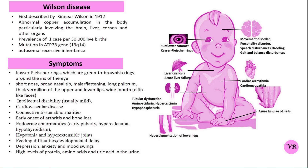Wilson disease is caused by mutations in the ATP7B gene, which is crucial for copper metabolism in the body. The gene is located on chromosome 13 at position 13.2.1.4. This gene encodes a copper-transporting ATPase enzyme responsible for transporting excess copper into bile for excretion from the liver. It also plays a role in regulating copper levels in the bloodstream. Mutations in the ATP7B gene lead to defective copper transport and accumulation in various tissues, particularly the brain and liver, causing the symptoms of Wilson disease.